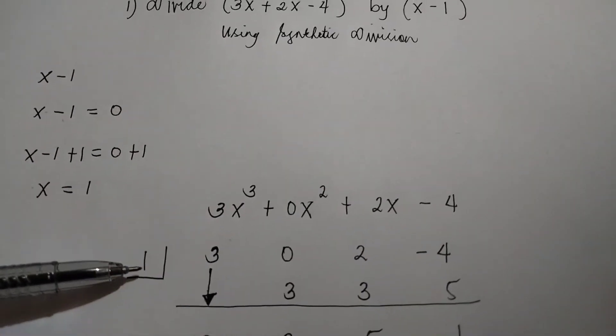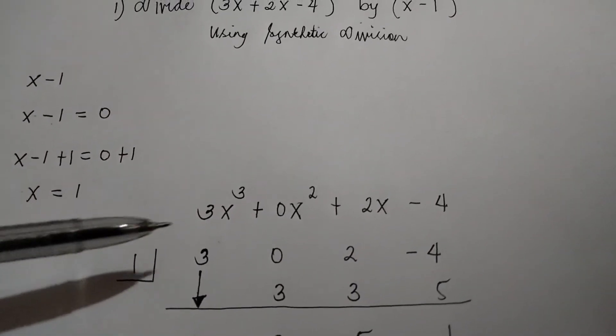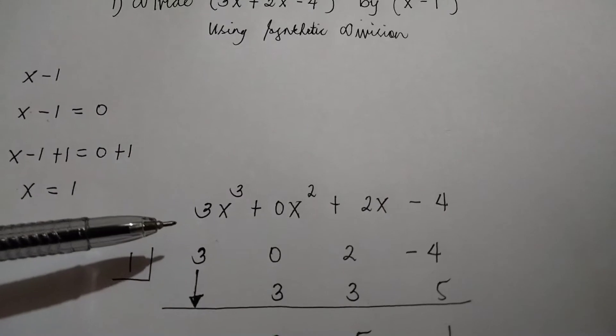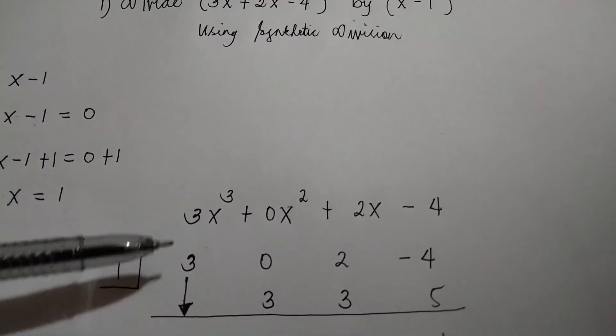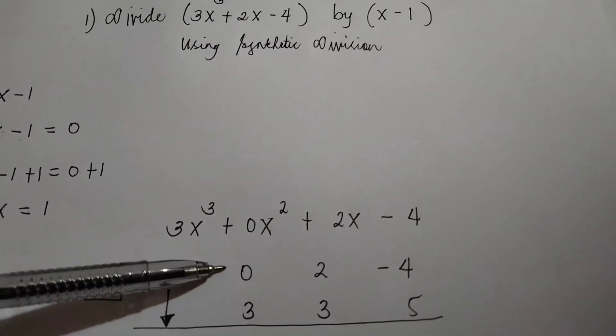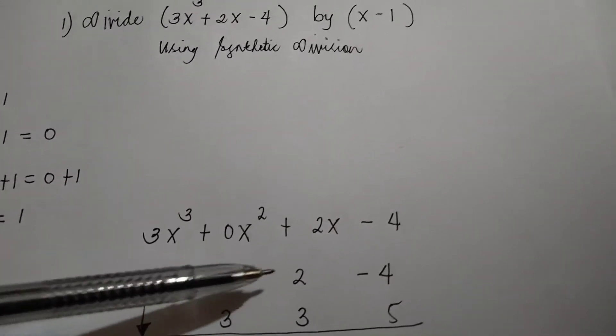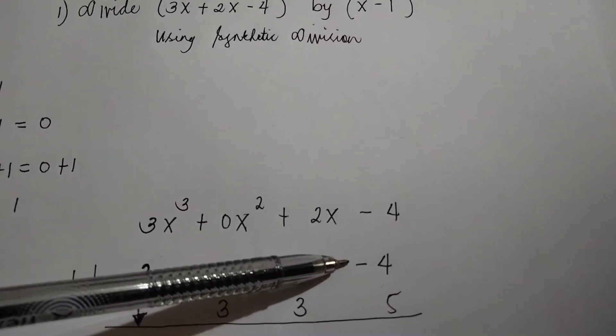You are going to write it here. Then take all the coefficients of the dividend: 3, 0, 2, negative 4.